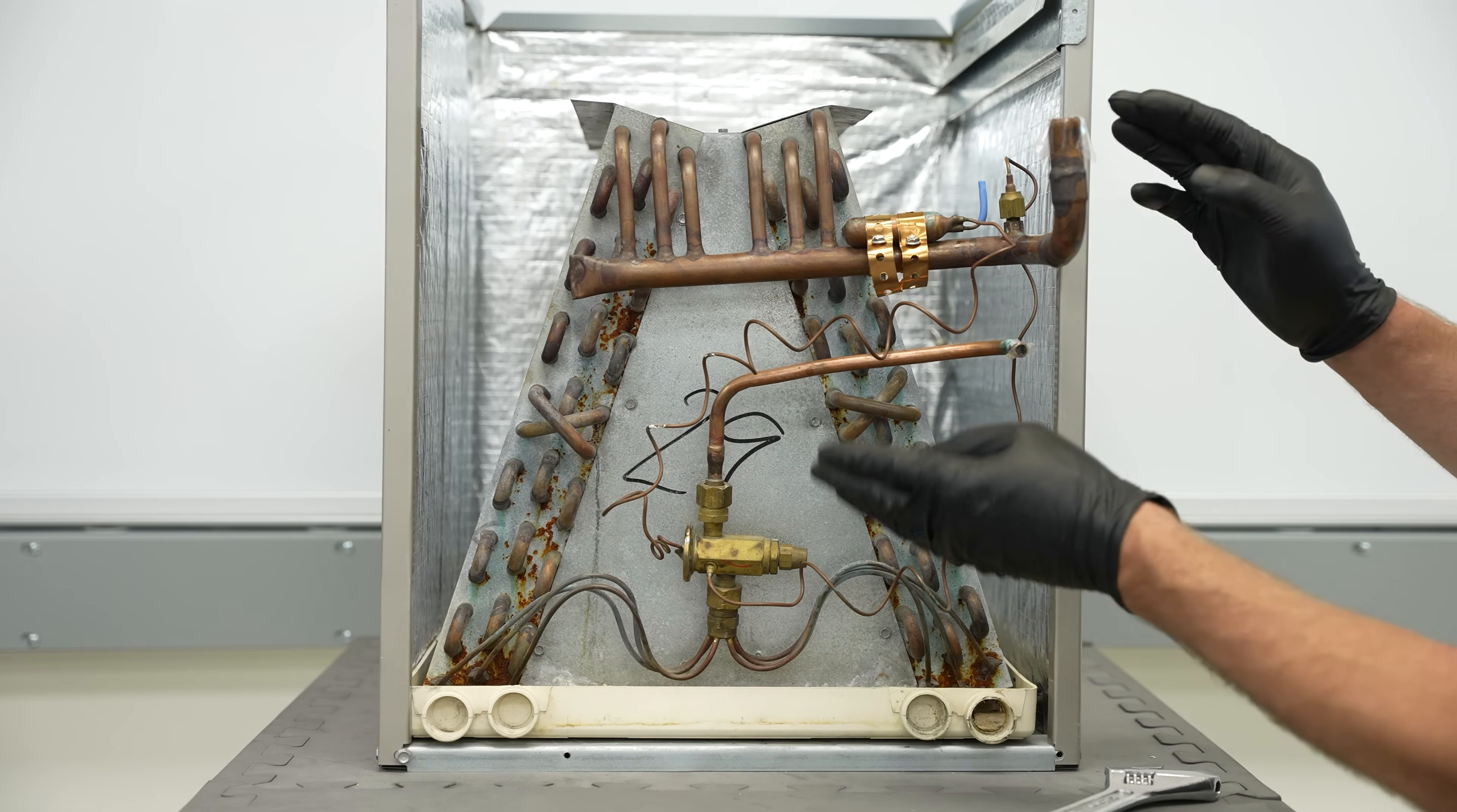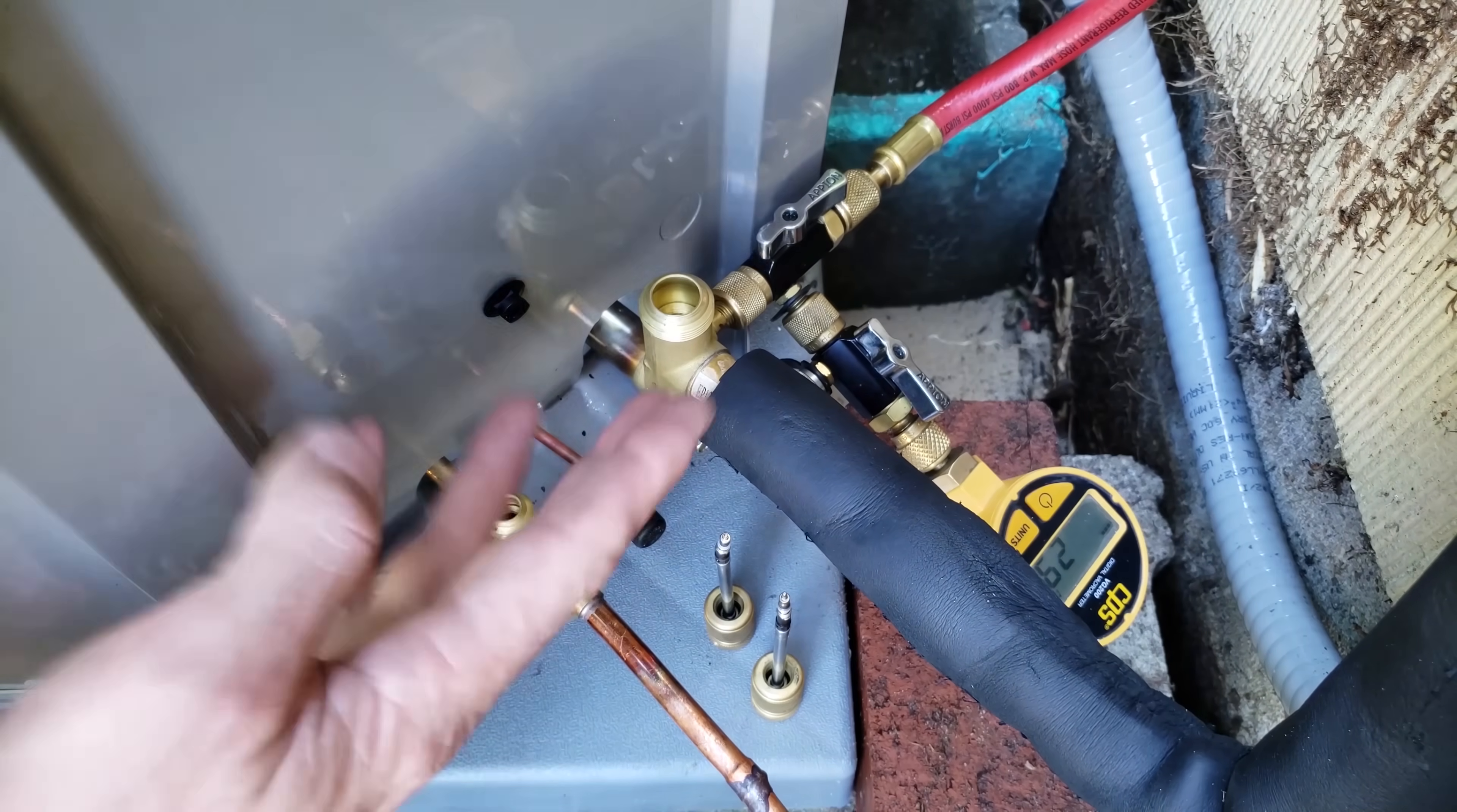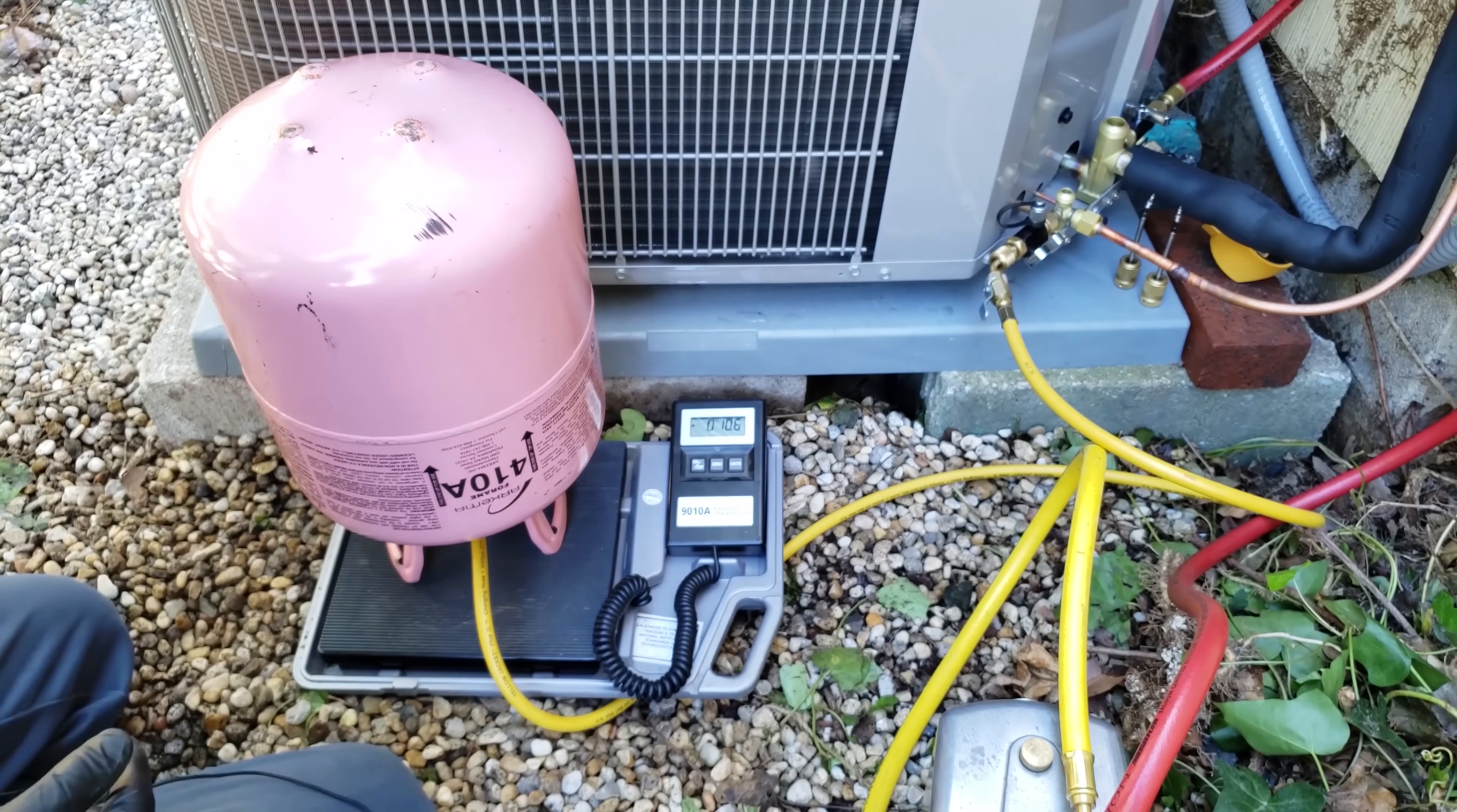After you put this together, you'd pressure test it, and then you would check the joints right here with bubble leak detector. After pressure testing, if you don't have any leaks, you can release the nitrogen, vacuum the system, and weigh in the correct amount of refrigerant back into the system. That would be the same amount of refrigerant that you recovered out.